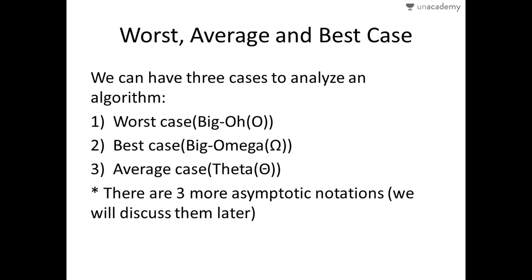There are three types of asymptotic notation: Big O, Big Omega, and Theta. Big O is also known as the worst case, Big Omega is also known as the best case, and Theta is also known as the average case.